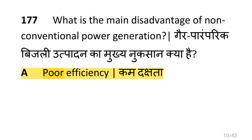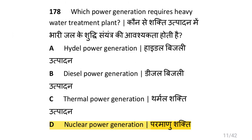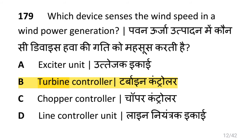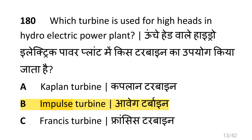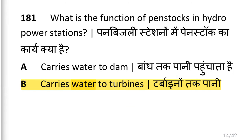What is the main disadvantage of non-conventional power generation, i.e. poor efficiency? Which power generation requires heavy water treatment plant, i.e. nuclear power generation? Which device senses the wind speed in a wind power generation, i.e. turbine controller?